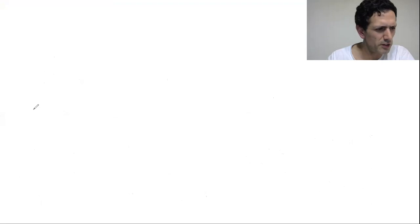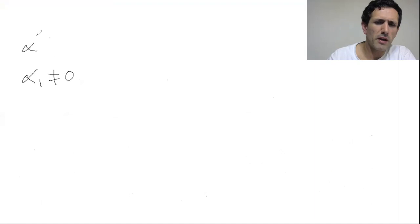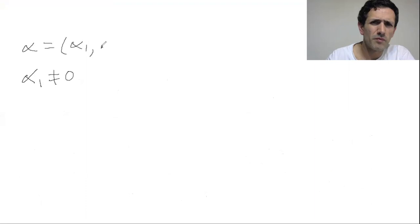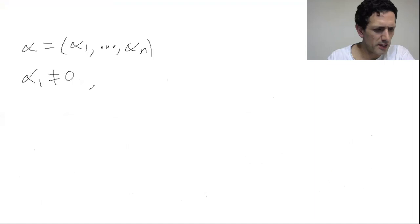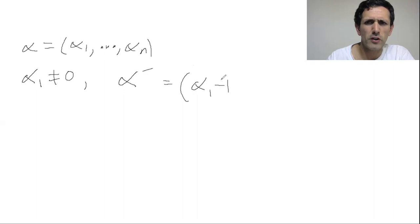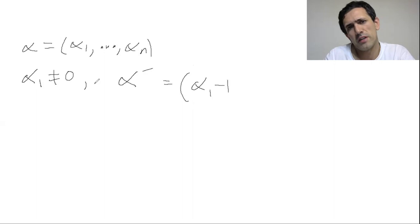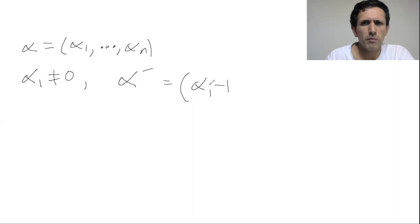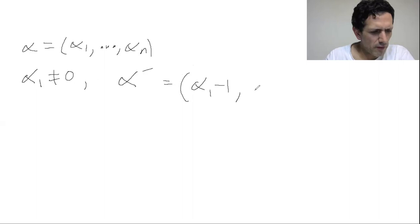Let's prove this. For the case α₁ ≠ 0: we just subtract one from α₁ to define α'. Since α₁ is a positive non-negative integer, α₁ − 1 is still a non-negative integer (could be zero, that's okay), and everything else stays the same. The order of α' is the sum of all the αᵢ minus one.